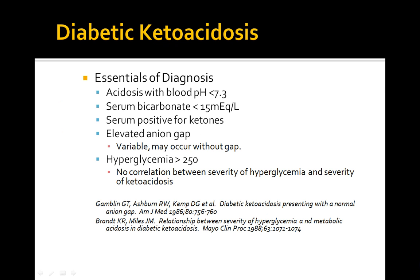The essentials for diagnosing diabetic ketoacidosis include an acidosis with pH less than 7.3, bicarbonate less than 15 mEq/L, serum and urine positive for ketones, and an elevated anion gap — though DKA can also occur without an anion gap. Patients have hyperglycemia with glucose greater than 250, and there is no correlation between the severity of hyperglycemia and the severity of ketoacidosis.